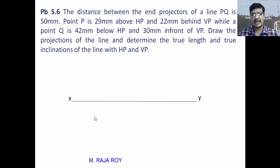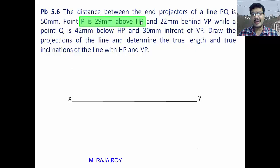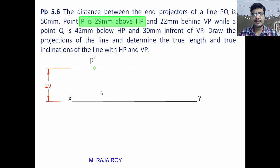Let us start the problem. First, draw the XY line. Now observe the given data. Point P is 29mm above HP, which means the front view of P will lie 29mm above the XY line. Draw a locus line 29mm above XY — on this line you locate P dash (the front view of P).